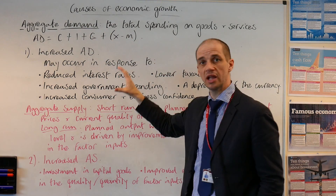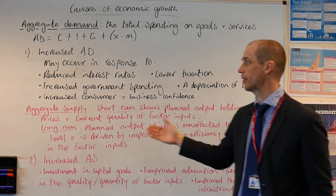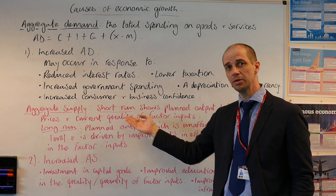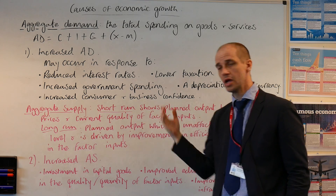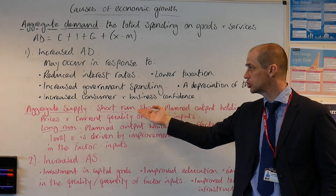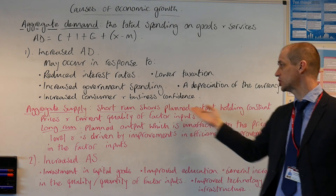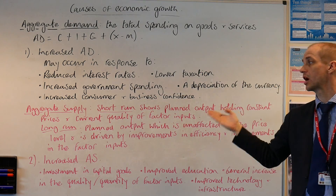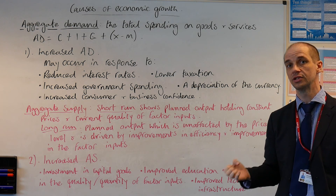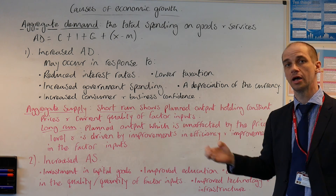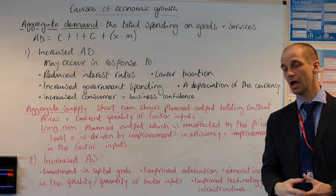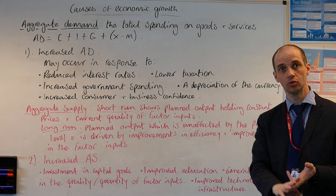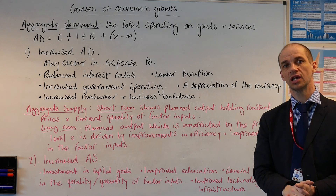So that's our first area. Now let's take a look at our second area — aggregate supply. Now this can be determined both in the short run and the long run. If we look at the short run aggregate supply, it shows planned output holding constant prices and current quality of factors of production — holding those elements constant. So these are our factor inputs: land, labour, and capital in particular.